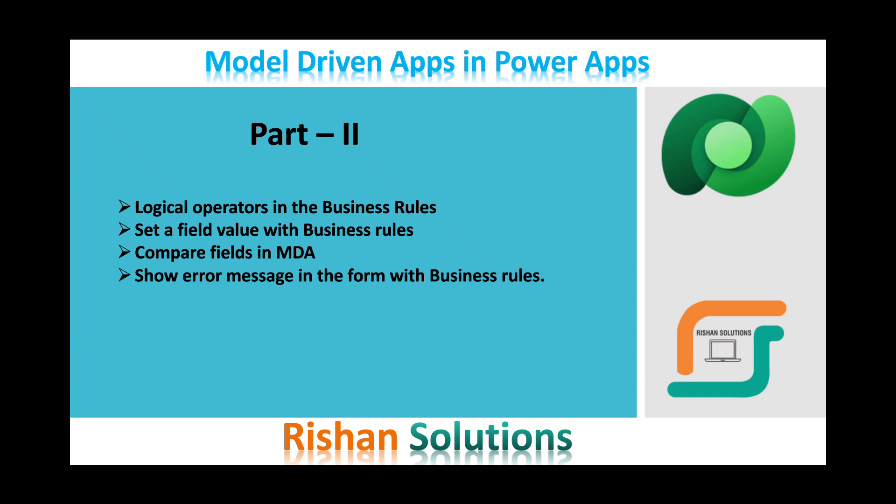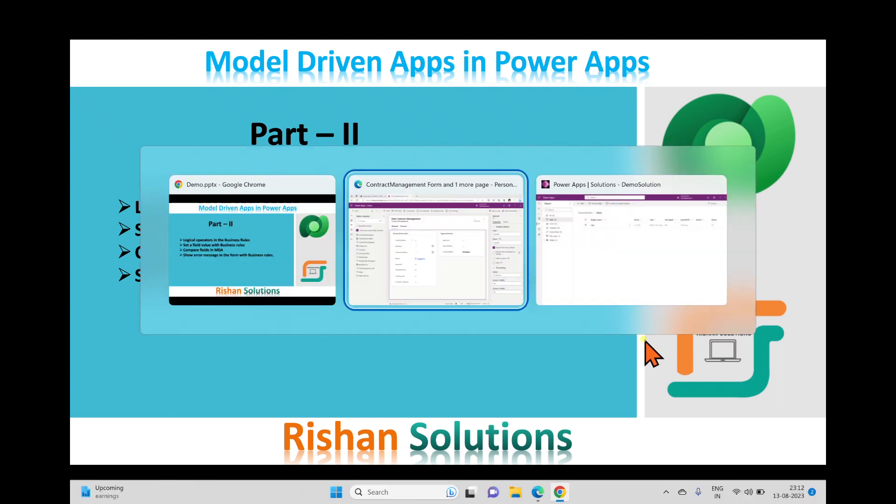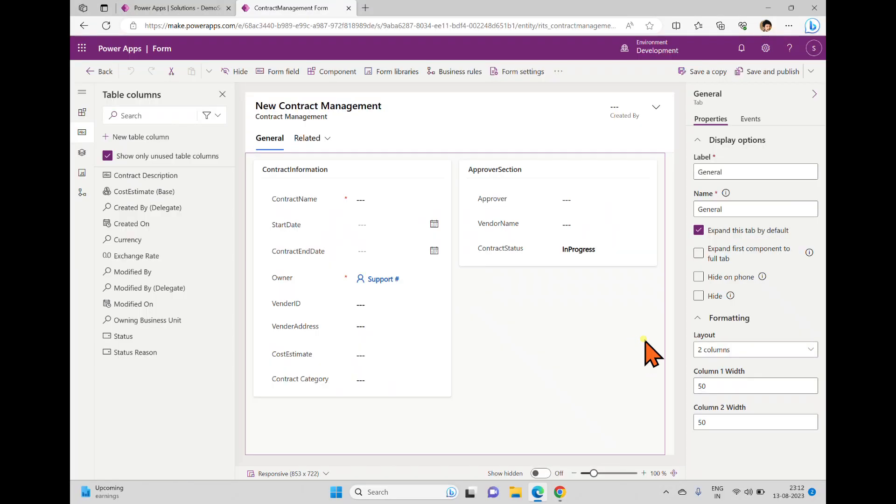In this video we'll discuss logical operators in business rules. We'll try to set a field value with business rules, compare some fields, and show error messages — for example, if a start date is greater than an end date we can compare fields and show error messages. So for that I'm going back to the solution.